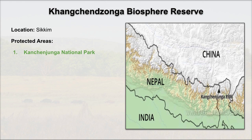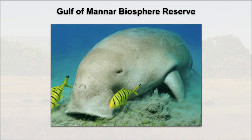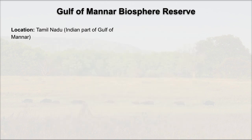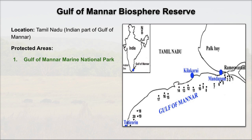Then there is Khangchendzonga Biosphere Reserve, located in Sikkim. The protected area is Kanchenjunga National Park itself — since Sikkim is a small state, there is not a lot of additional area. Then Gulf of Mannar Biosphere Reserve, located in Tamil Nadu, which includes the Indian part of the Gulf of Mannar — shared between India and Sri Lanka. The protected area is Gulf of Mannar Marine National Park.